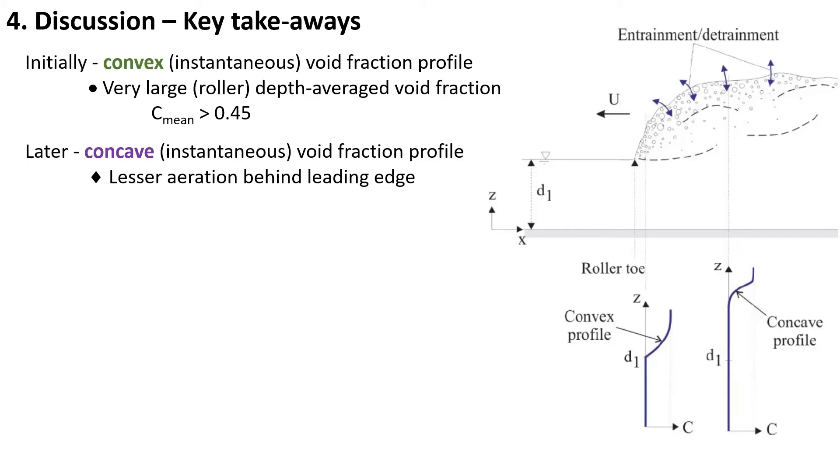At the leading edge, the convex profile implies very large depth average aeration in the roller, typically more than 50 percent, while the concave profile further behind implies much lesser aeration in the trailing part of the roller.